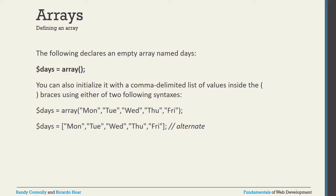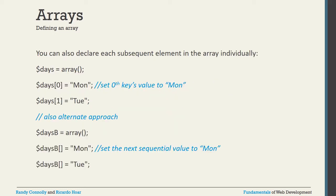Another way to initialize the array is using square brackets instead of the array() keyword. You write dollar-days equal to, then directly use square brackets, put the value inside double quotes, close the double quote, add a comma, then the second value in double quotes. This is an alternative way to initialize the array when declaring values.